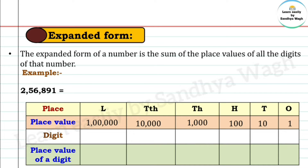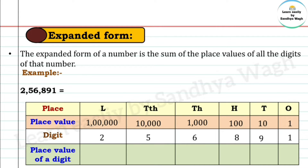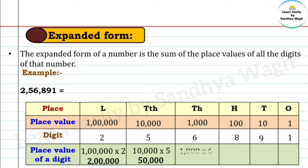In the number 2,56,891: 2 is in the lakhs place, 5 is in the ten-thousands place, 6 is in the thousands place, 8 is in the hundreds place, 9 is in the tens place, and 1 is in the ones place. So the place value of 2 is 2,00,000; place value of 5 is 50,000; place value of 6 is 6,000; place value of 8 is 800; place value of 9 is 90; and place value of 1 is 1.